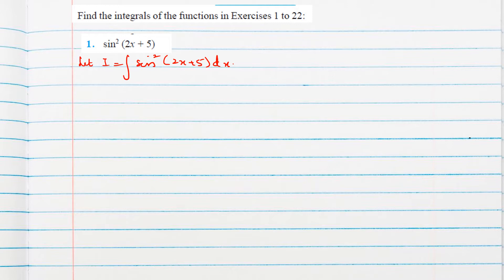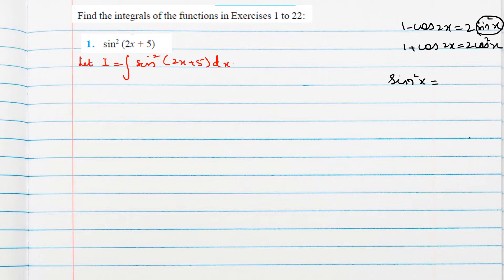We know the identity: 1 − cos2x = 2sin²x, and 1 + cos2x = 2cos²x. Here we want sin²x, so we can write sin²x = (1 − cos2x) / 2.